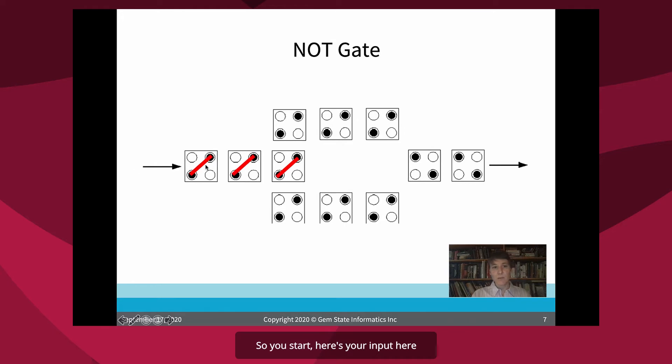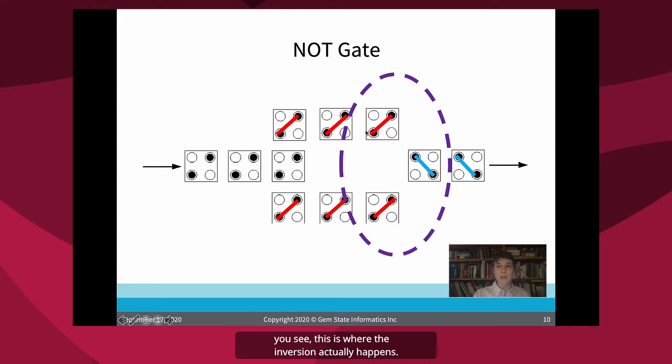So you start. Here's your input here. And I have in red here the orientation of the electron. So this is a logical zero. I'm showing you on my screen. The input comes in here and gets passed along. Here you have fanout. Fanout just splits the same signal. So you have two copies of it. Travels along here. Finally, over here, you see this is where the inversion actually happens.